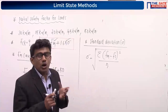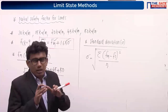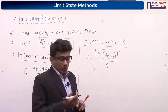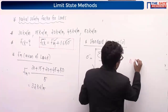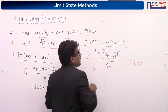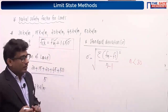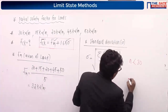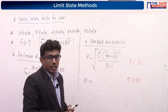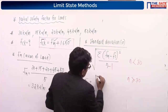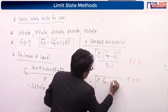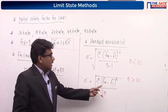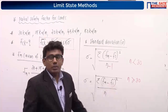This equation is not valid everywhere. Our IS code says to use a minimum of 30 number of samples. If the number of samples is less than 30, we modify the equation: sigma = square root of [sum of (Fm minus fi) squared, divided by (n minus 1)].